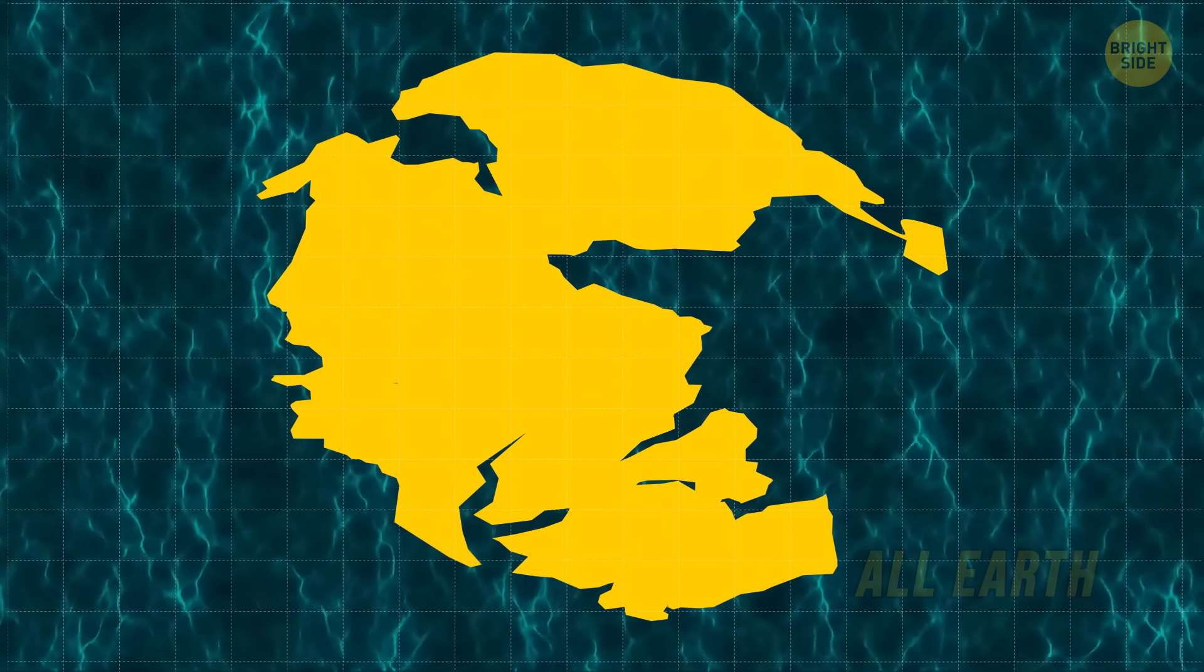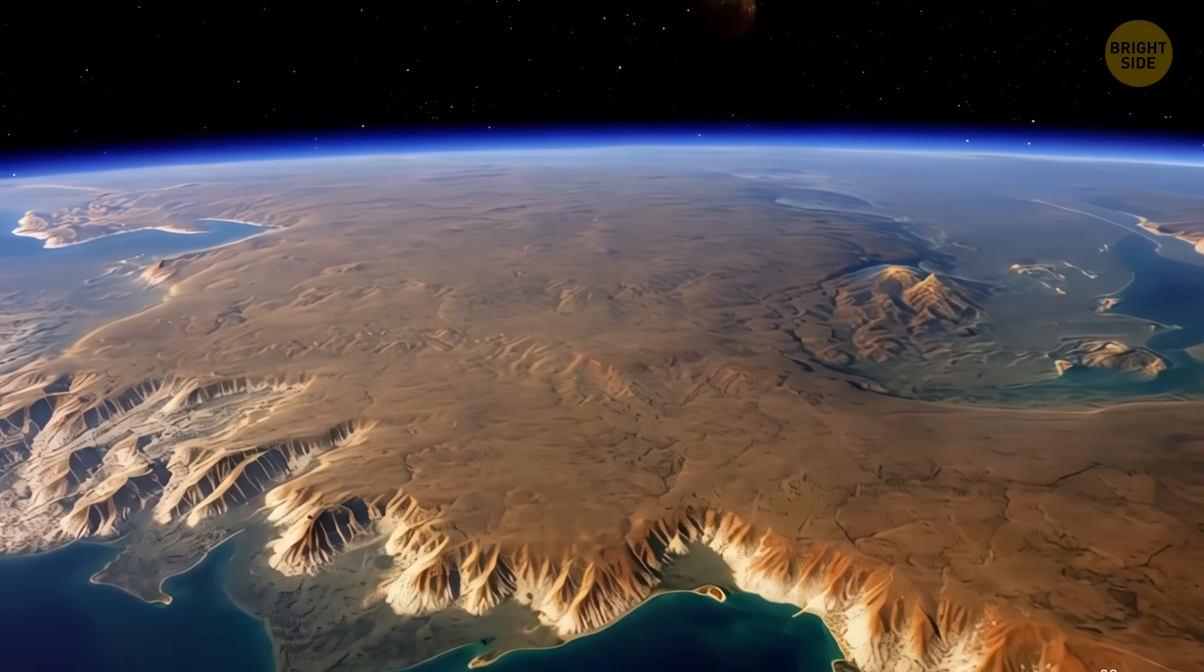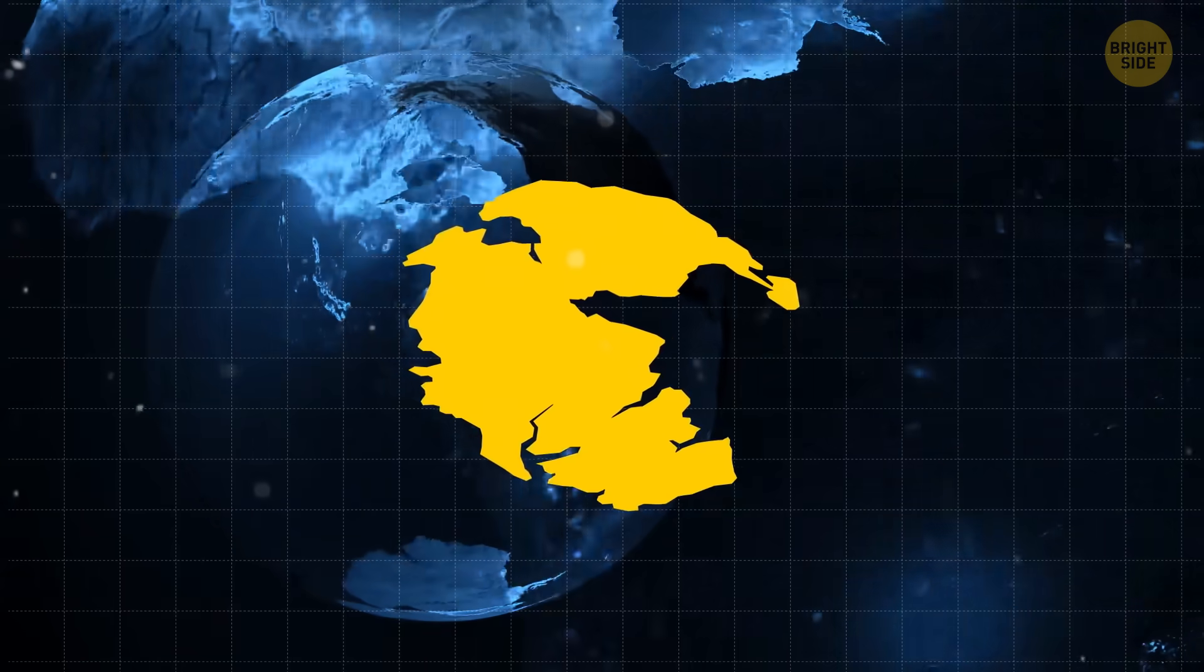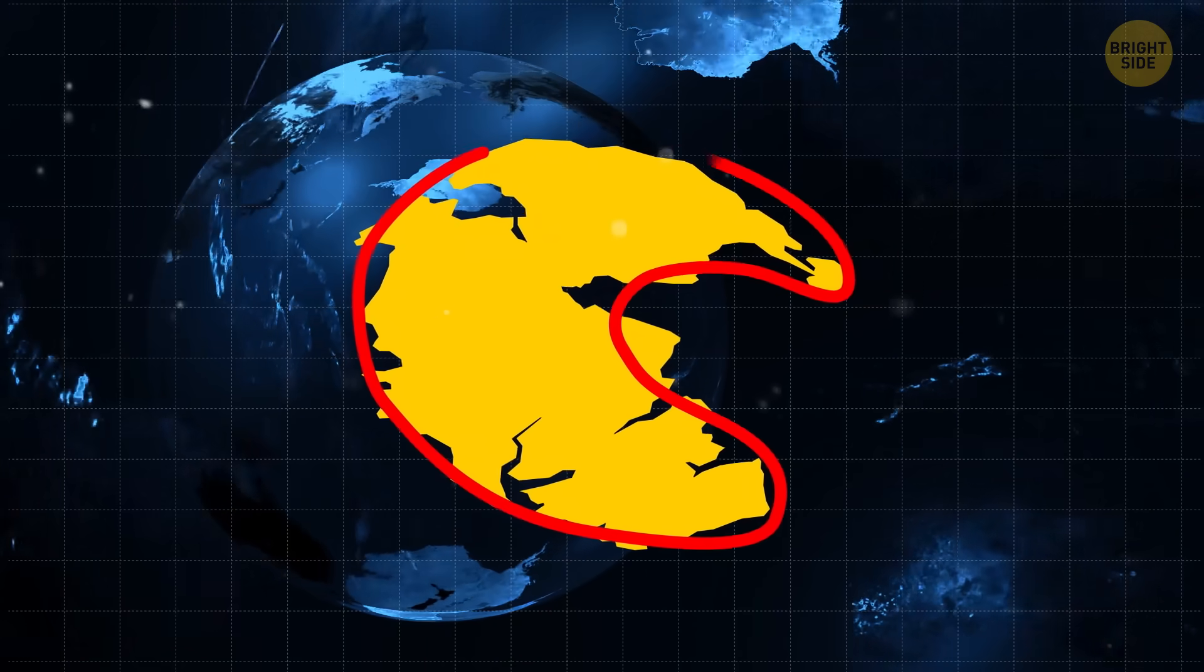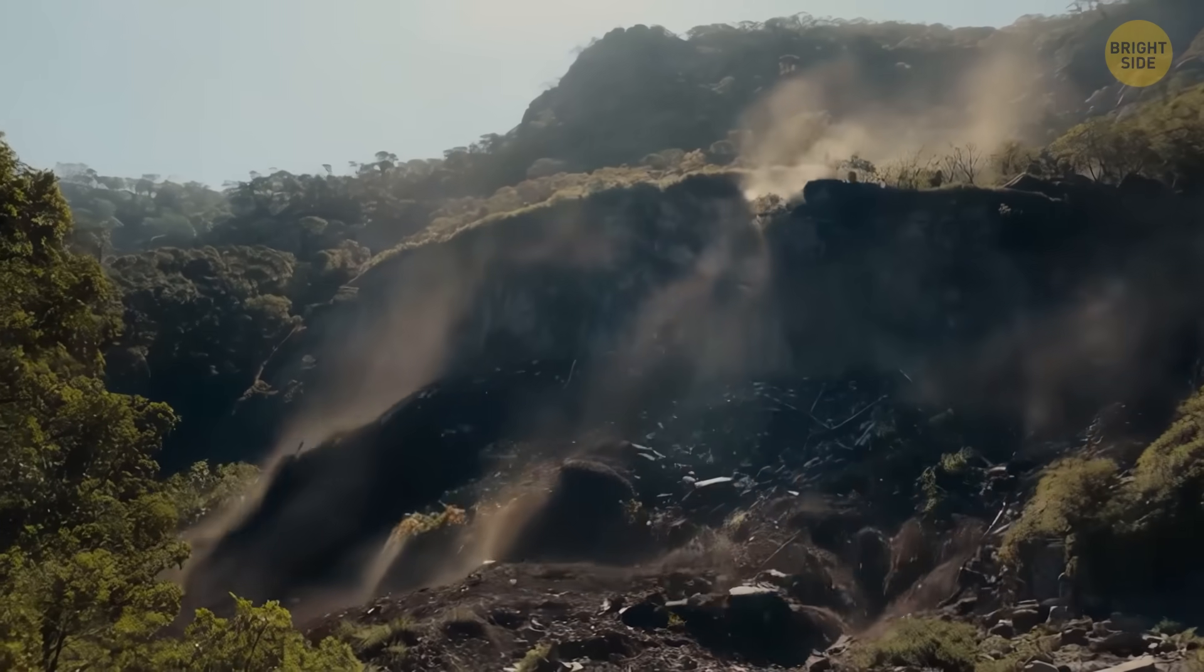Pangaea also had a massive water neighbor called Panthalassa. So our entire world was a huge piece of land surrounded by a huge piece of ocean. The megacontinent looked like a giant sea, stretching between the tippy-top and bottom of our planet. But as stories go, things changed.